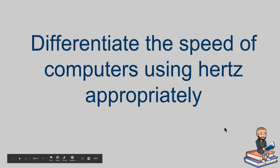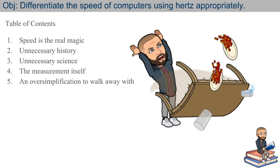The objective today is to differentiate the speed of computers using hertz appropriately. So first I'm just going to talk about speed being the real magic in a computer. Then let me give you some unnecessary history, unnecessary science, the measurement of hertz itself, kind of describe that a bit. And then I'll finish off with an oversimplification so you can walk away feeling a little bit better about this term.